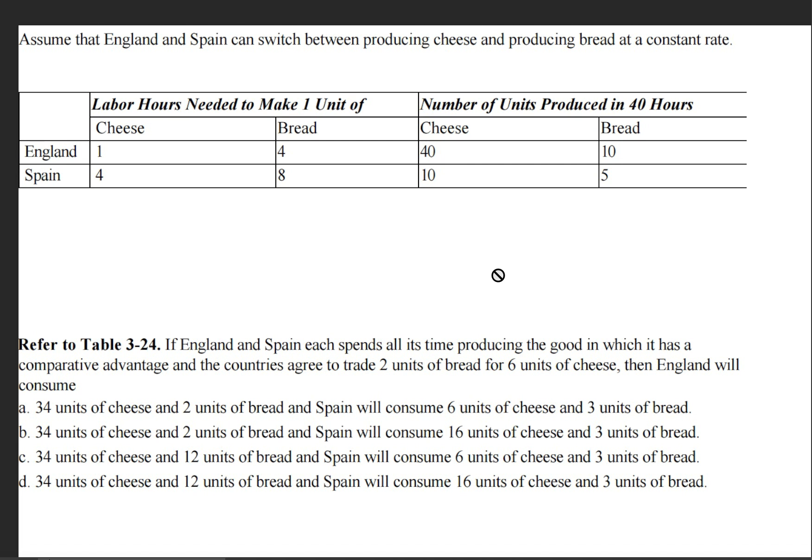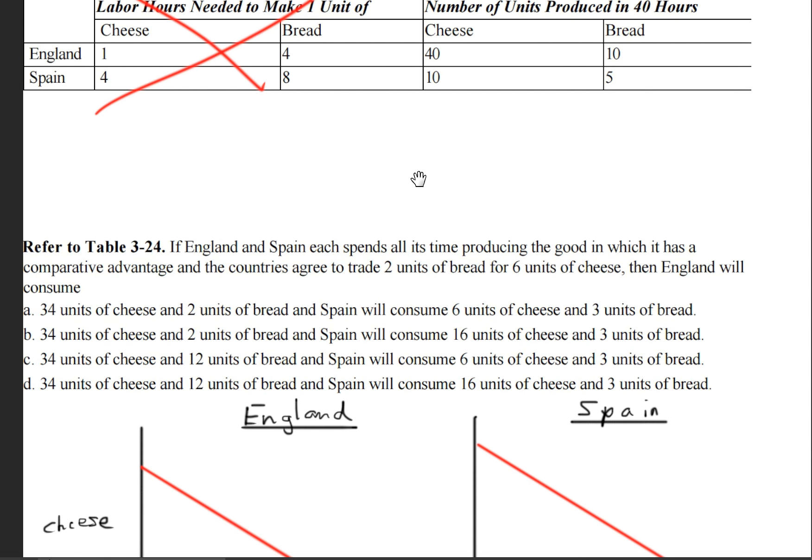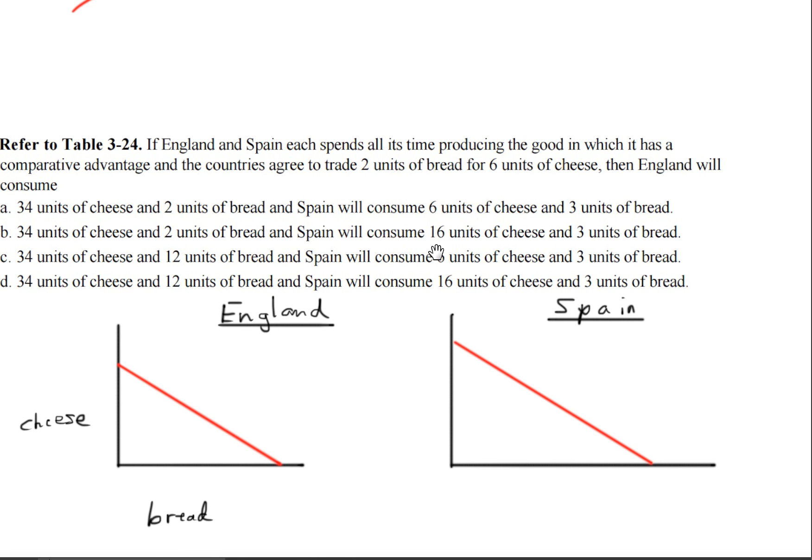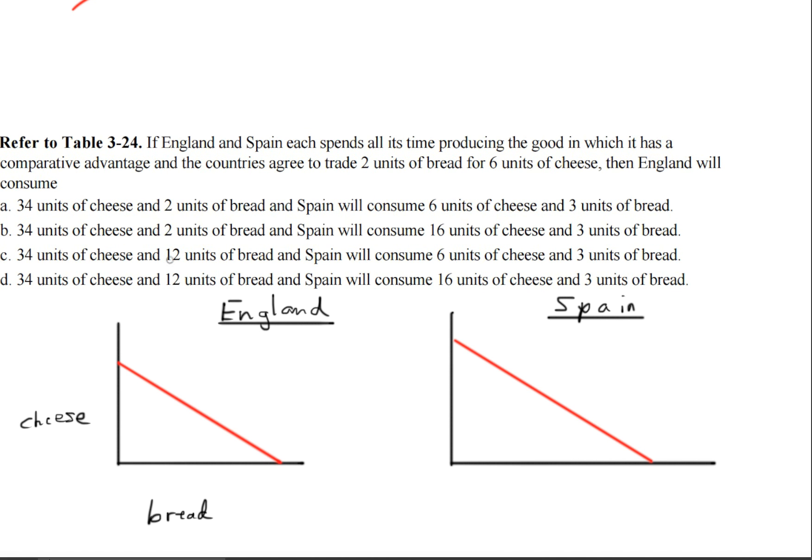So to begin this question, we need to create a production possibilities frontier. Analyzing the data table given, we can cancel this stuff out, this is not important. Instead, we're going to direct our attention to the quantities given here. We're going to use these quantities to create a production possibilities frontier curve for each country.